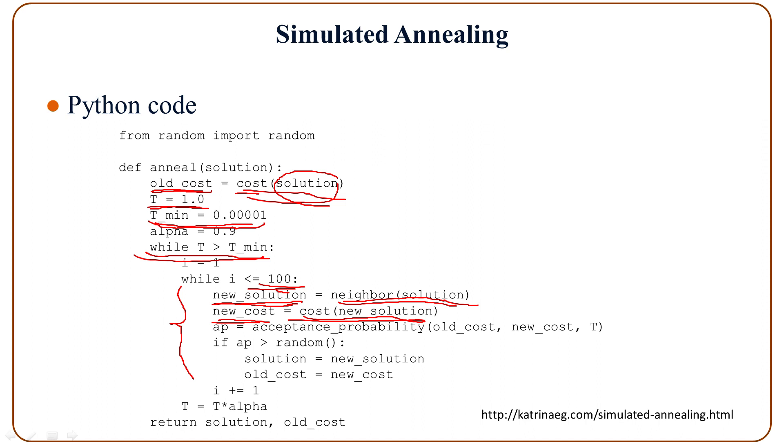And then check the acceptance probability function. Give it the old cost, the new cost, and also the temperature.